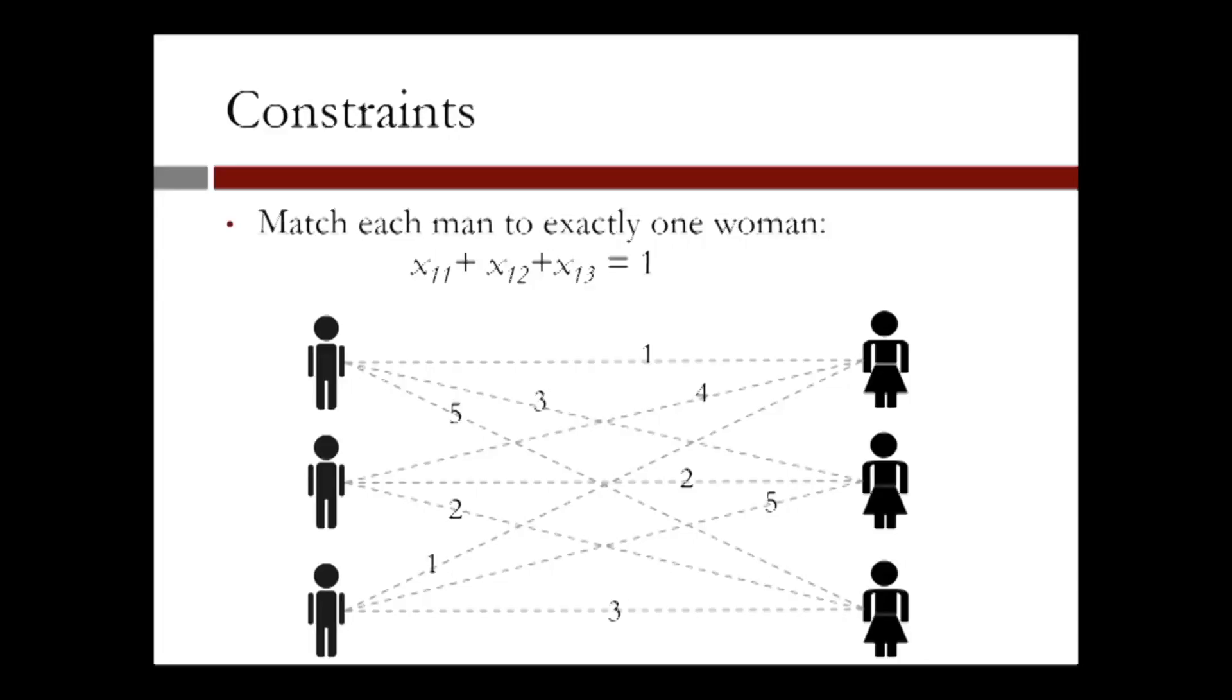Similarly, each woman, say woman one, should match to exactly one man, and we represent this constraint mathematically as x11 plus x21 plus x31 is equal to 1.